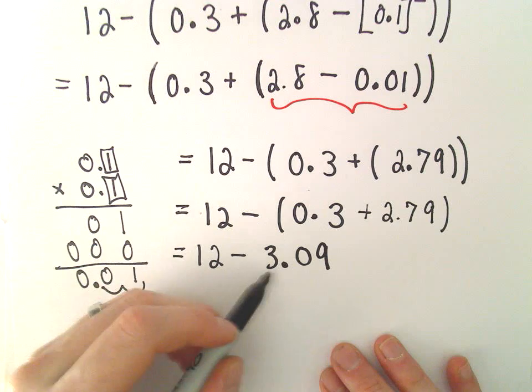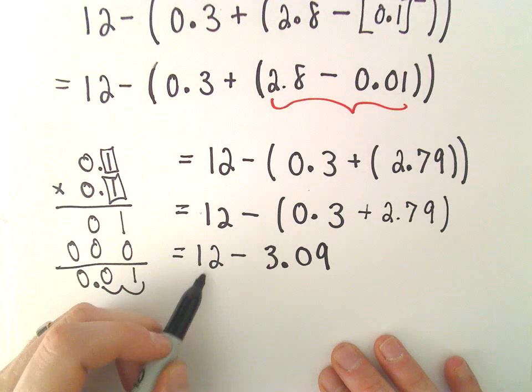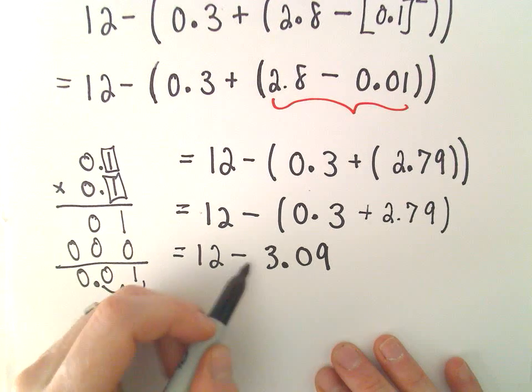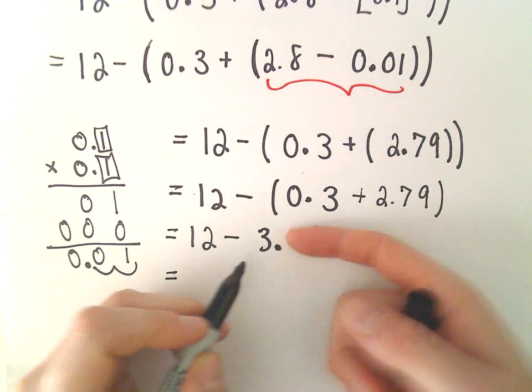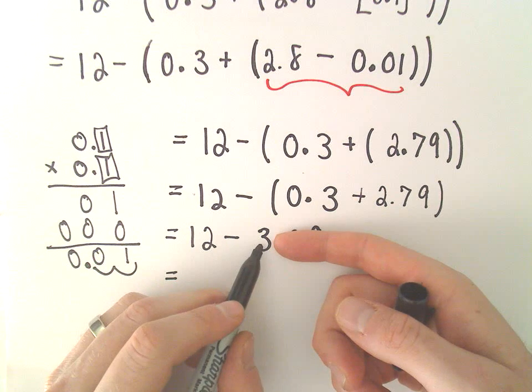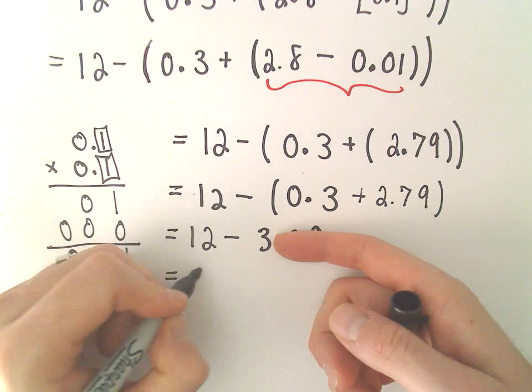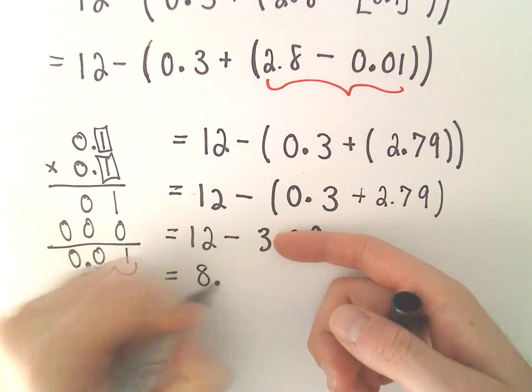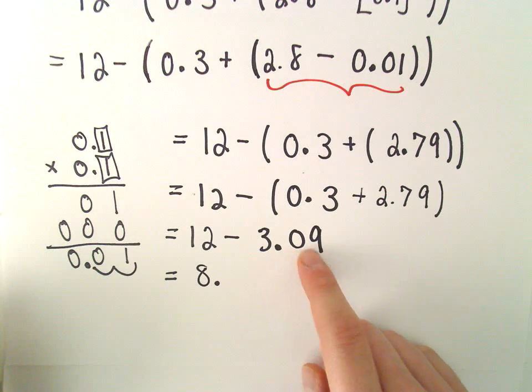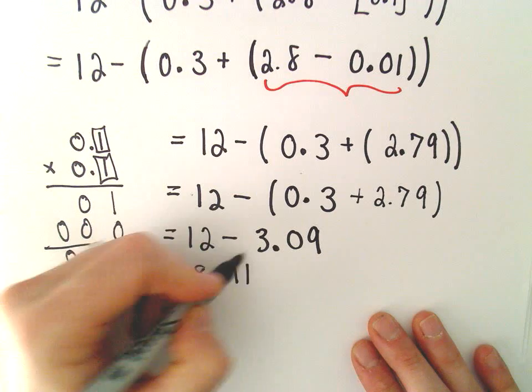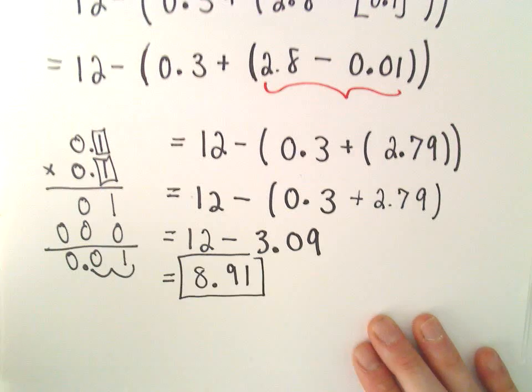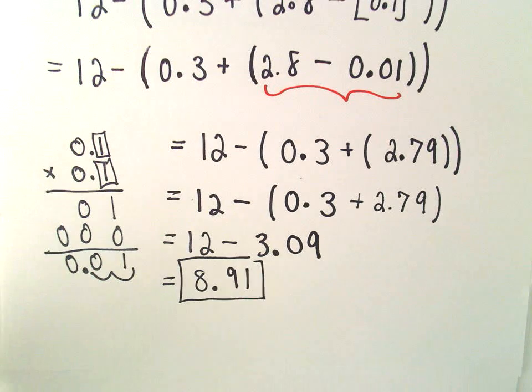And now it says we've got 12 minus 3.09. So if you have $12 and somebody takes away $3.09 - if they took away $3, I guess you'd have $9, but they're taking away more than that, so we should have 8-something. Well, if they take away another $0.09, you'd have $8.91 left over. So our final solution here, after we simplify everything, is 8.91.